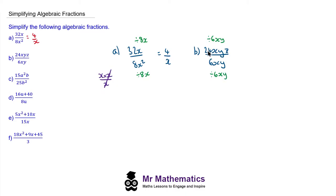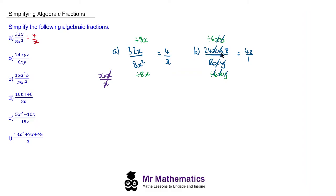So now 24 divided by 6 makes 4. x will cancel with x to make 1, and y will do the same. So we're left with 4 on the numerator. For our denominator, 6 divided by 6 makes 1, x divided by x makes 1, and y divided by y makes 1, so we're left with 4 over 1. Therefore 24xyz over 6xy simplifies to make 4z.